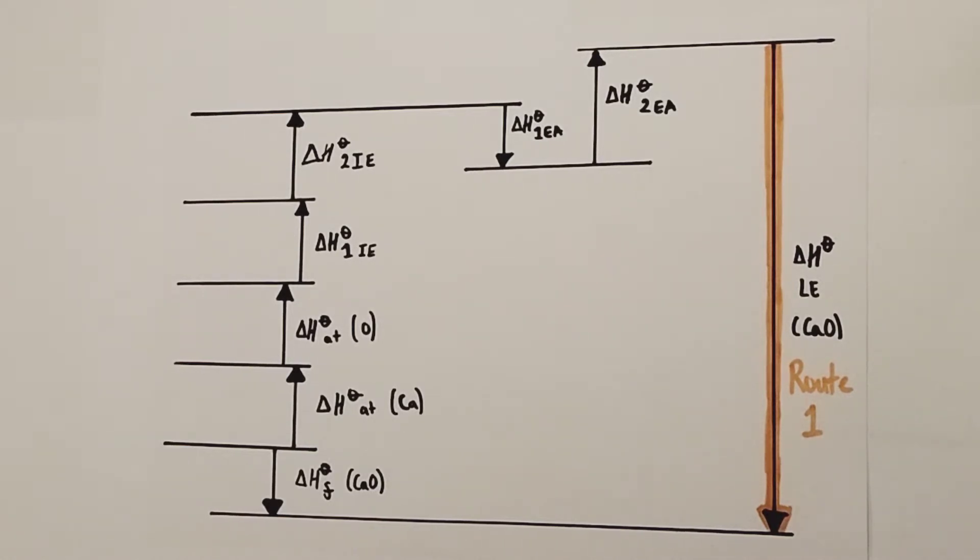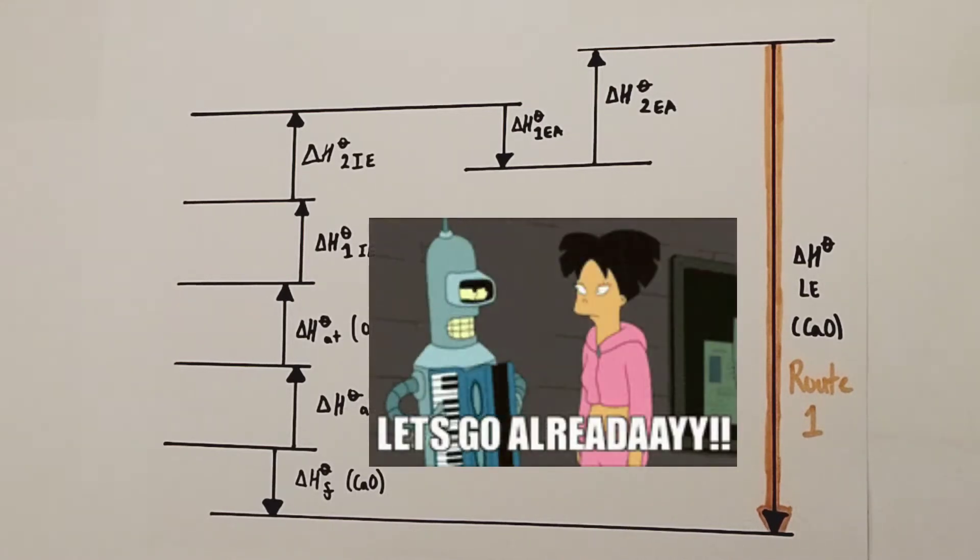Before I start, if you'd like more of an introductory video looking into how Born-Haber Cycles work, some key definitions and a simple example such as sodium chloride, please check out the card that will appear in this video. It'll take you straight to that video, give you an introduction before cracking into this example. With that done, let's go!